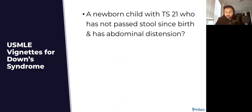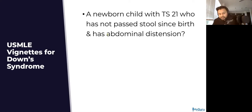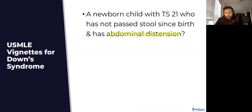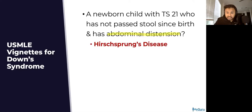A newborn child with trisomy 21 who has not passed stool since birth has abdominal distension. We have a newborn who hasn't passed stool — meaning they haven't passed meconium, the first stool. In this scenario, you are going to be worried about Hirschsprung's disease.